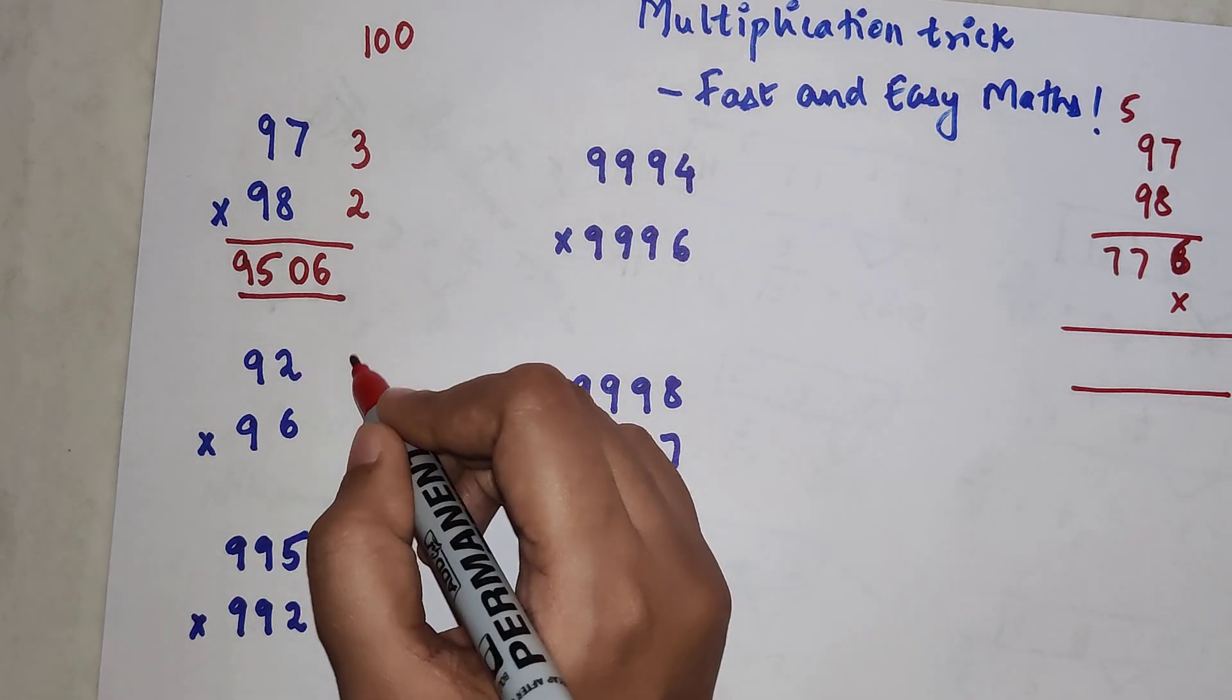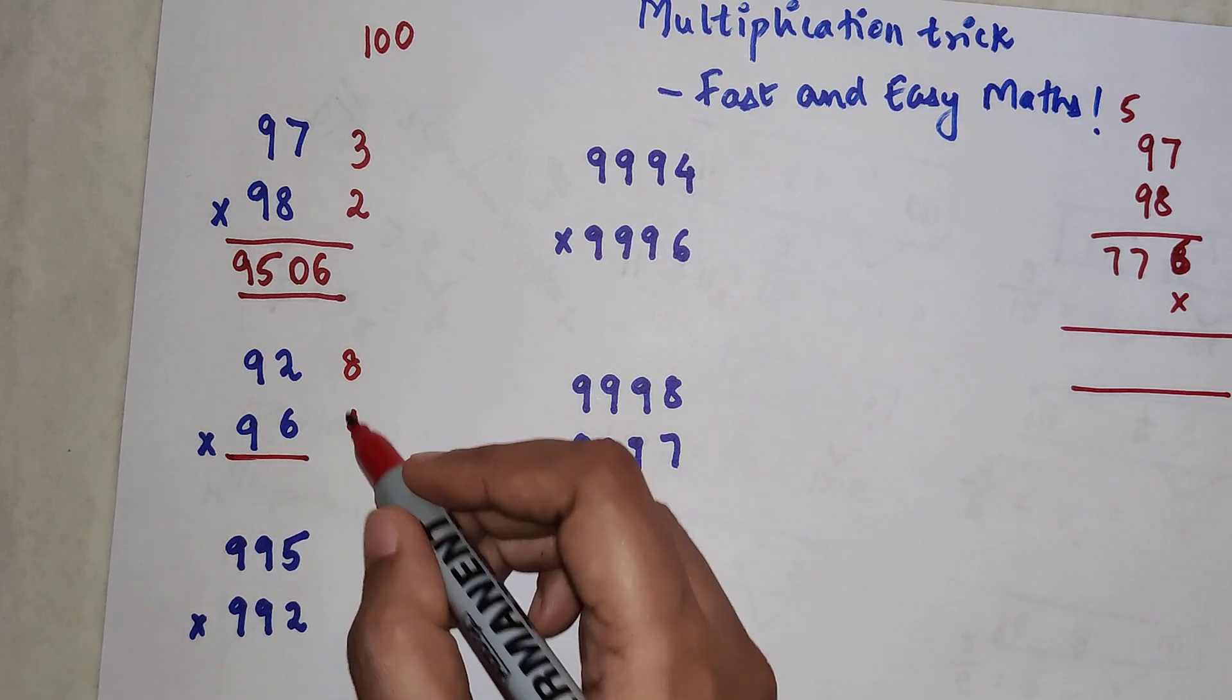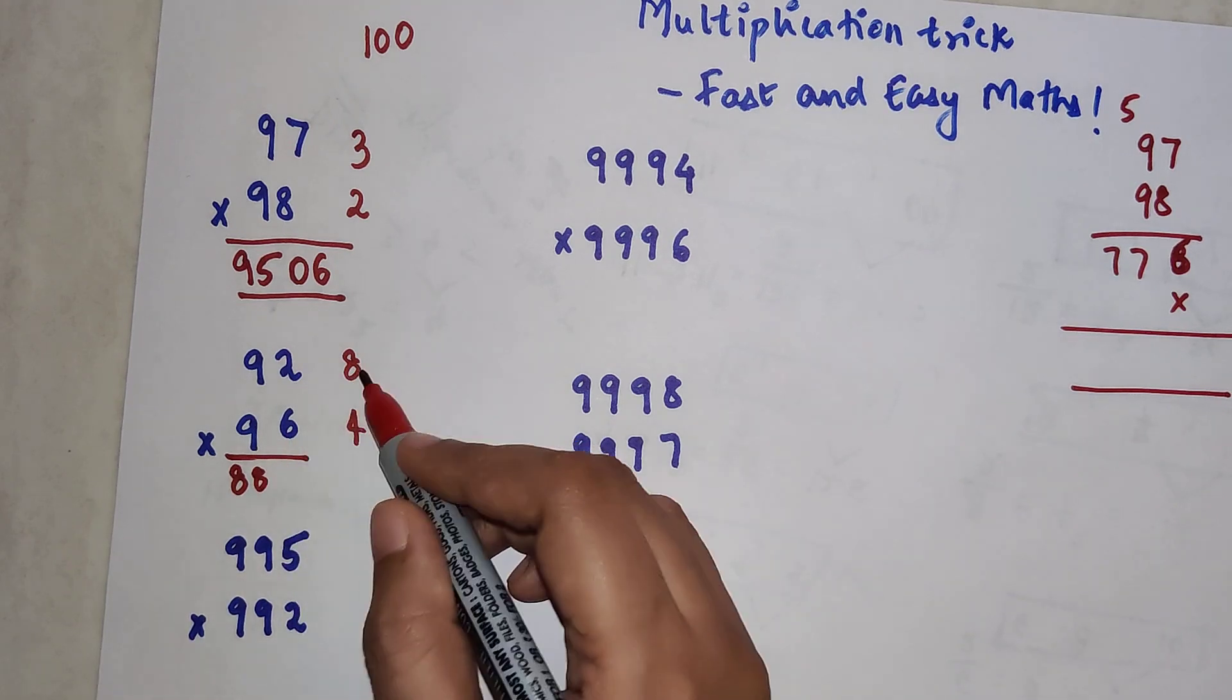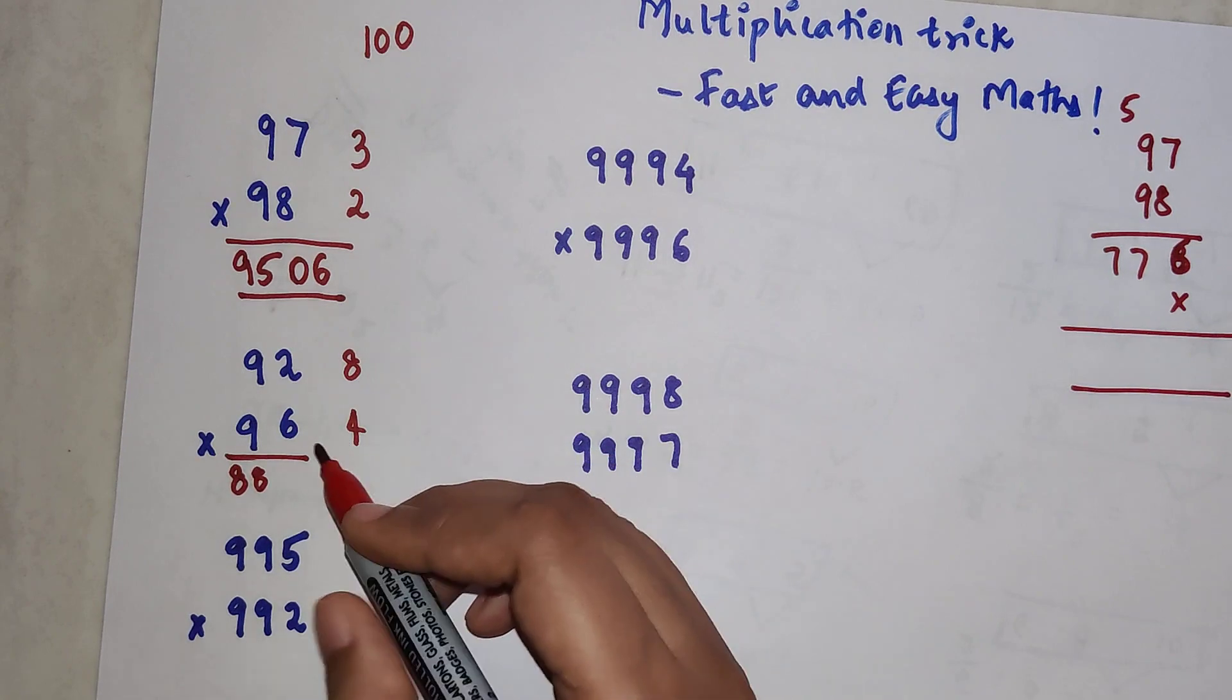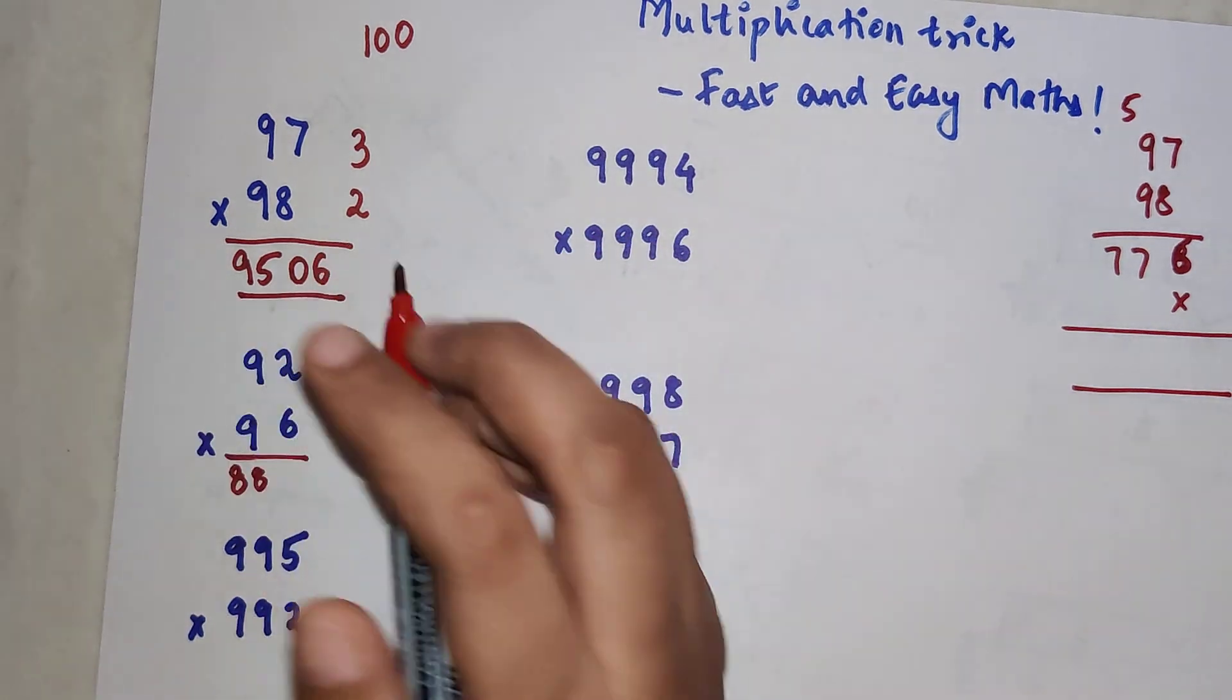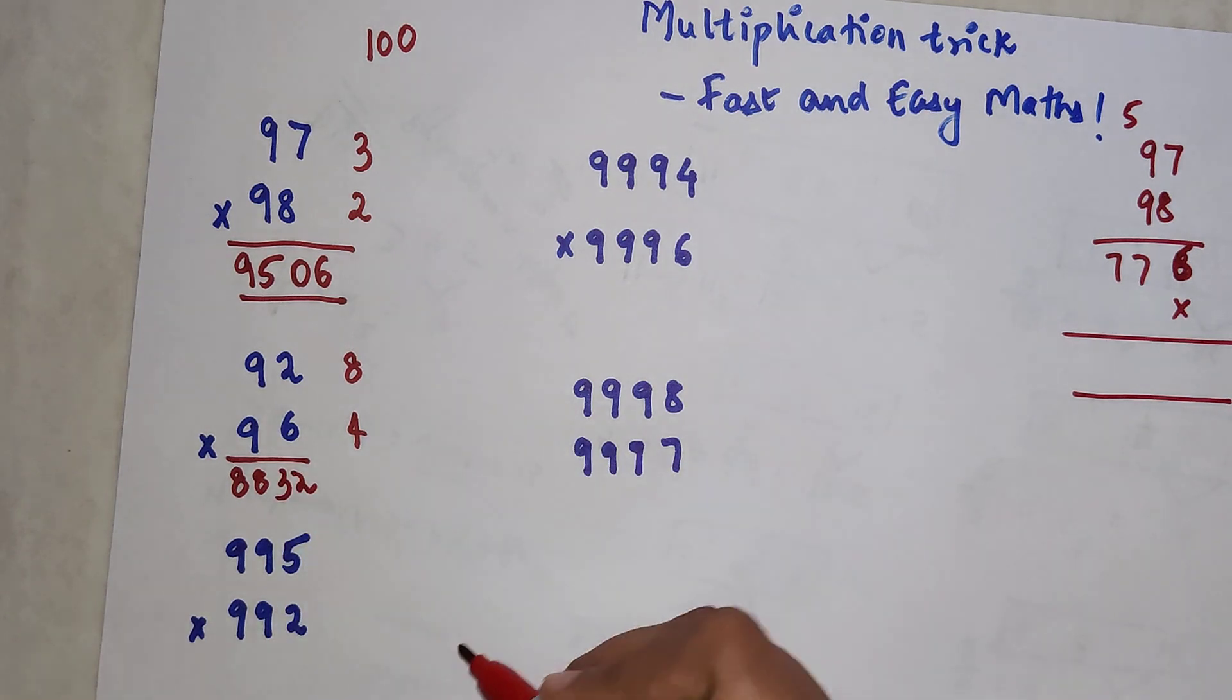Now let's look at one more. The difference is 8 here, the difference is 4 here. So you subtract 4 from 92, that gets you 88. And if you do it the other way around, your answer will be 88. And 8 into 4 gets you 32. Now 32 is a two-digit answer and we always wanted the second part to have two digits, so we know the answer is correct. We don't need to add an extra zero.